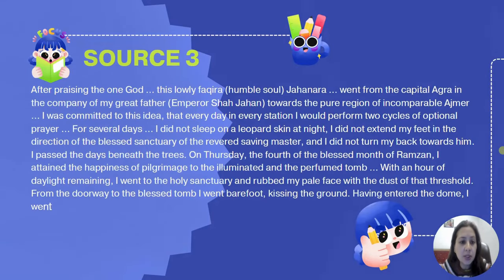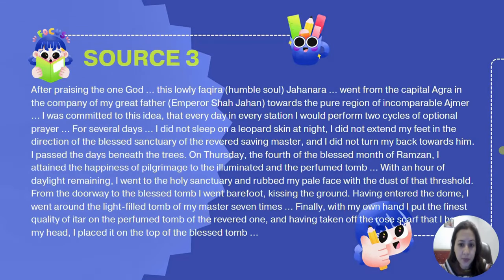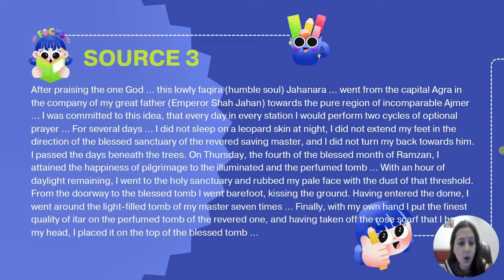Moving on to the third source, this is by Jahanara, the daughter of Emperor Shah Jahan. This passage describes her visit to the Dargah of Ajmer, the shrine of Sufi saint Maunuddin Chishti.